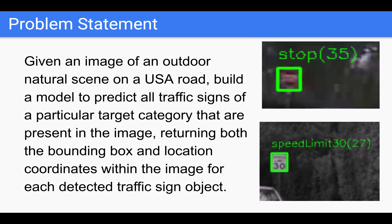My project's problem statement can be summed as follows. Given an image of an outdoor natural scene on a USA road, build a model to predict all traffic signs of a particular category that are present in the image, returning both the bounding box and location coordinates within the image for each detected traffic sign object.